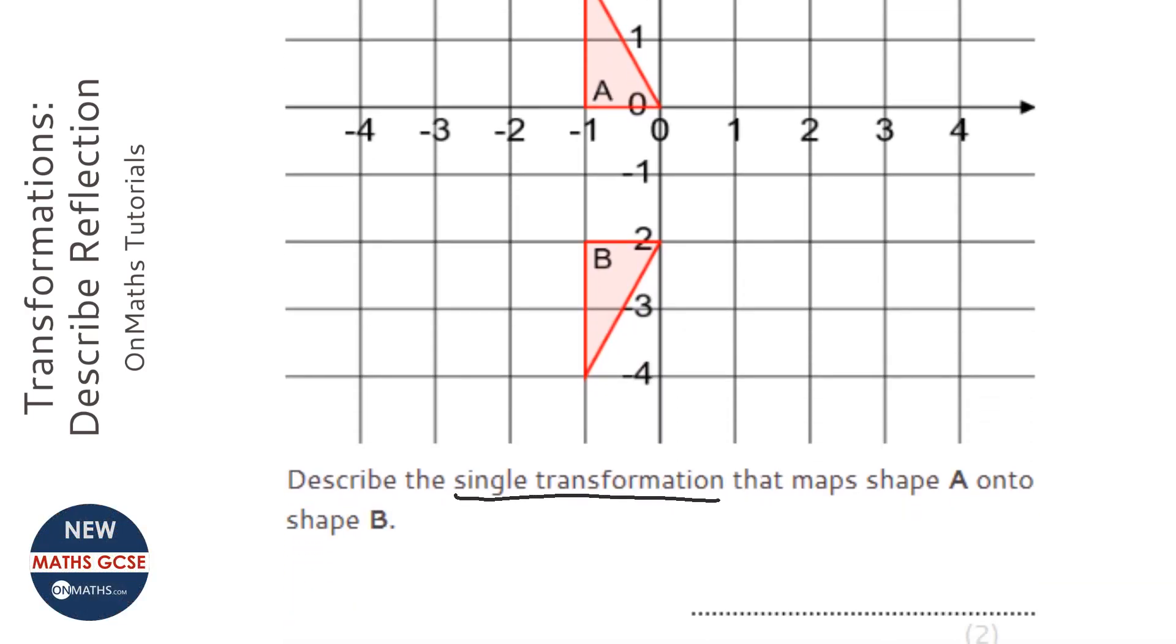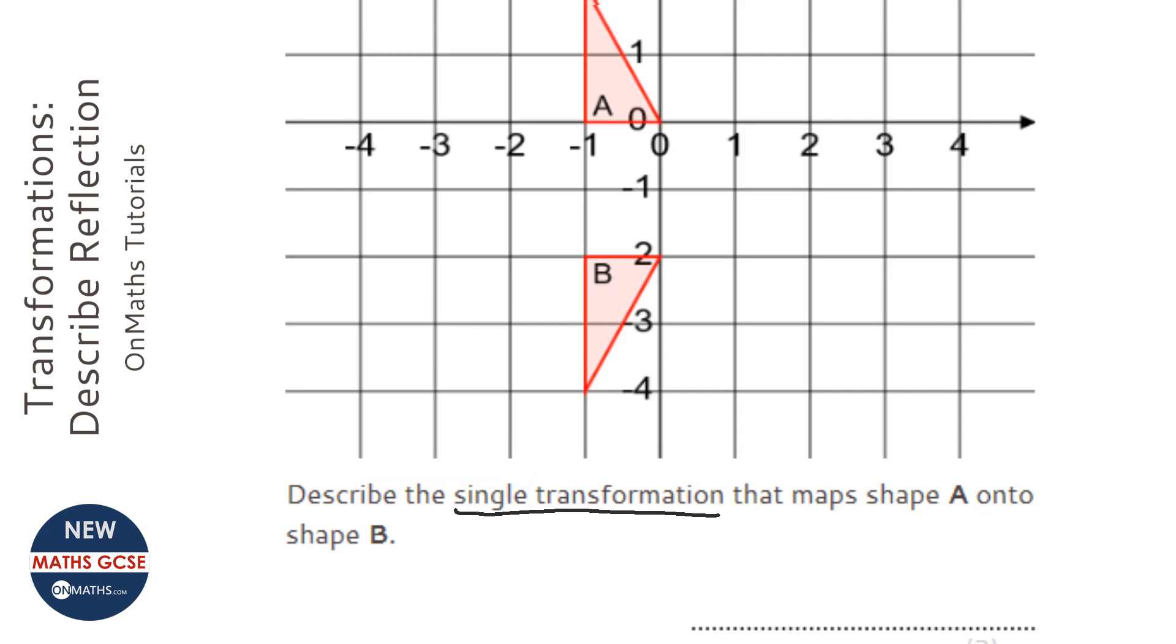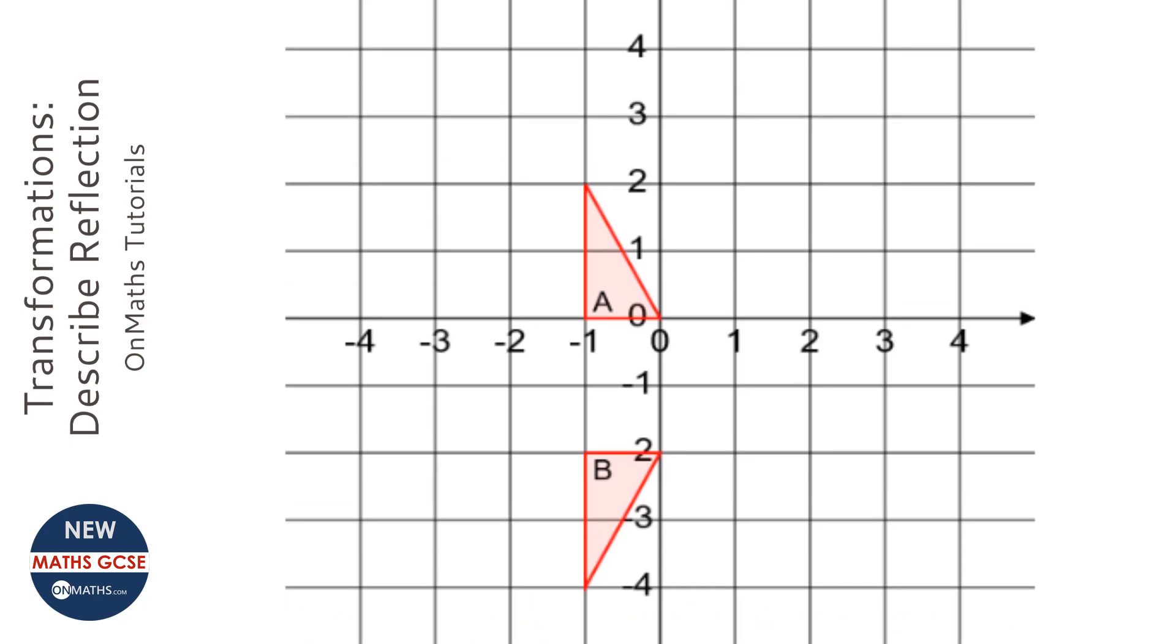Okay, so we're asked to find a single transformation that maps shape A onto B. I go through the transformations and ask myself, has it just simply moved? Well, it's kind of been flipped over, so it's not just been moved. So it's not a translation.